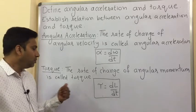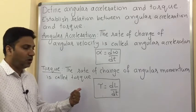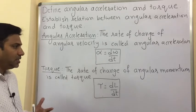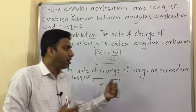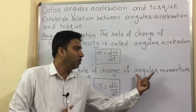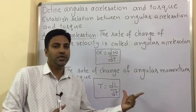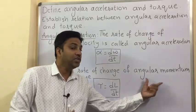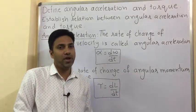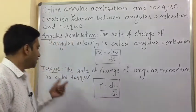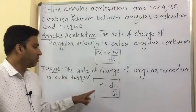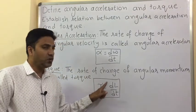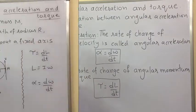The second definition: torque. The rate of change of angular momentum is called torque. That means, at what rate angular momentum is changing with respect to time — that is called torque. The formula is tau equals dL by dt.